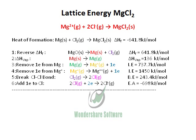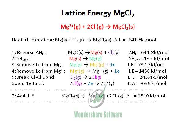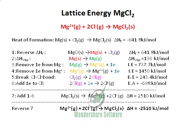We add up all of the equations, and all the terms shown in the correct colors get canceled. The resulting equation, when compared with the lattice energy equation, is a reverse of it. So we just reverse equation 7, and we get the lattice energy as −2510 kJ/mol.